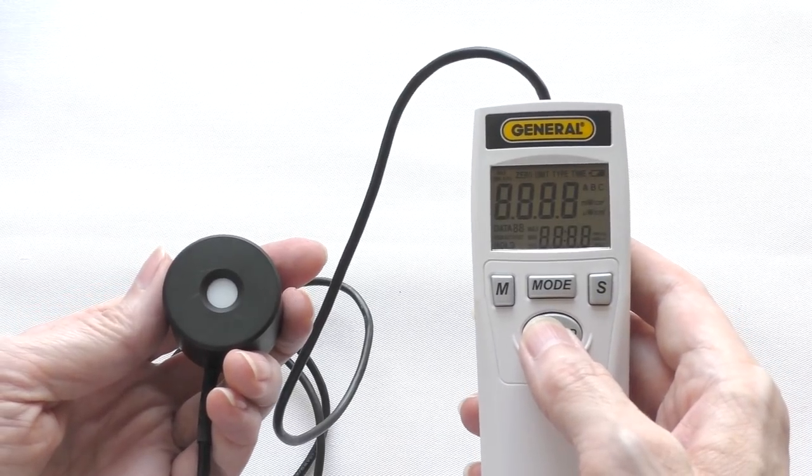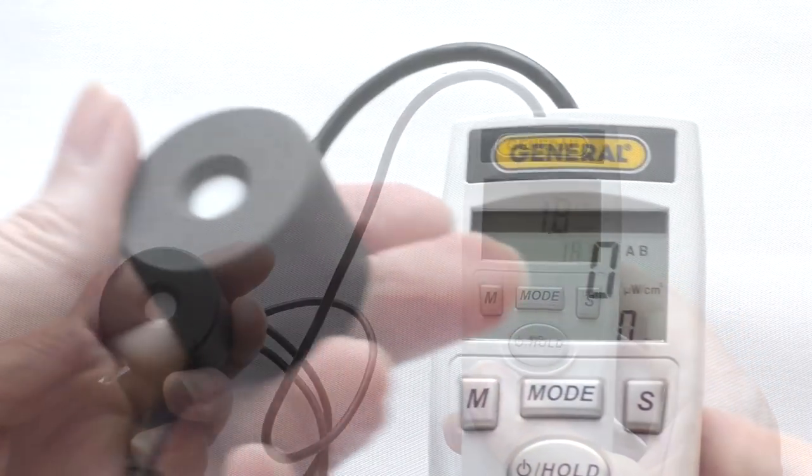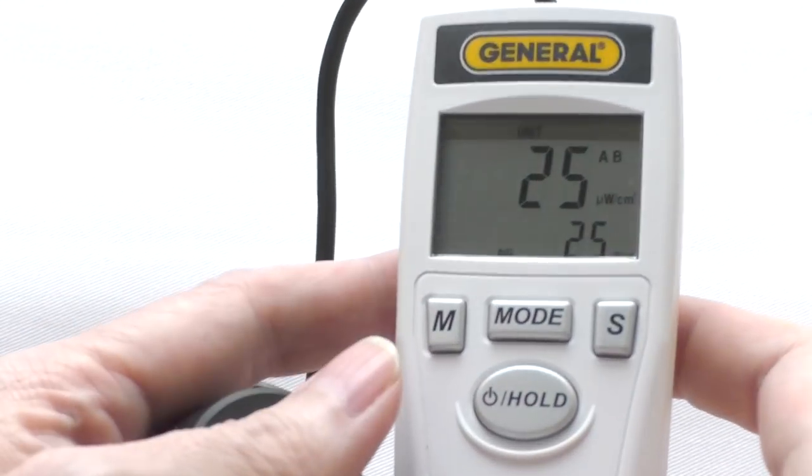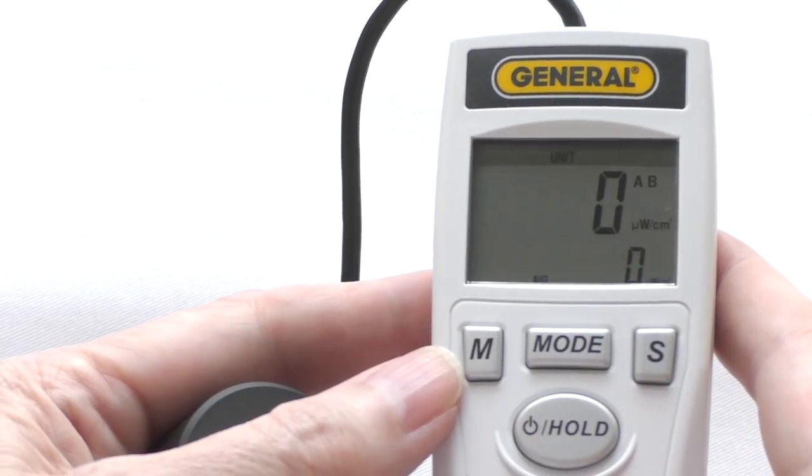I'm turning it on, and it measures the combined UVAB light in microwatts per cubic centimeter, and blocking the sensor, I get zero.